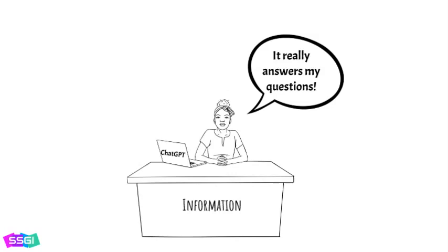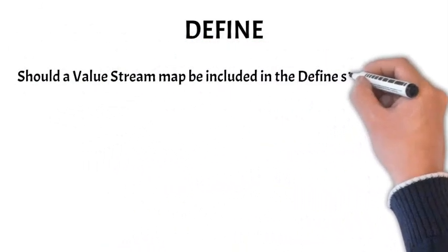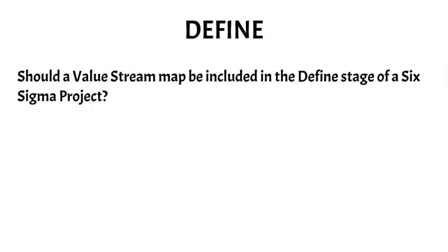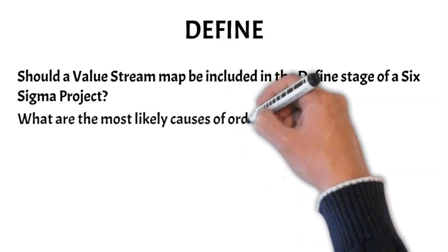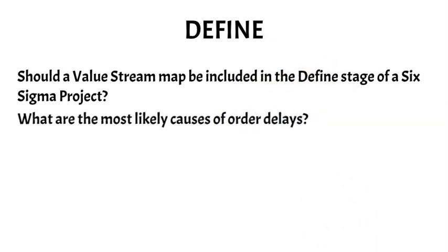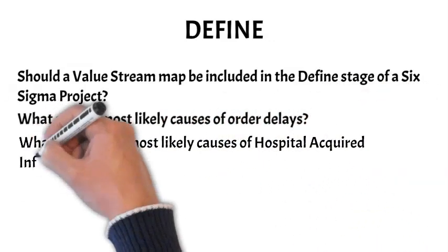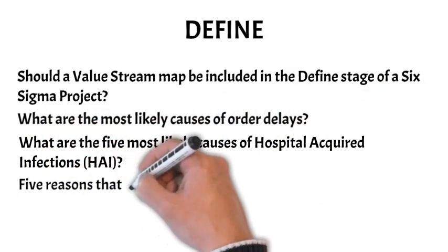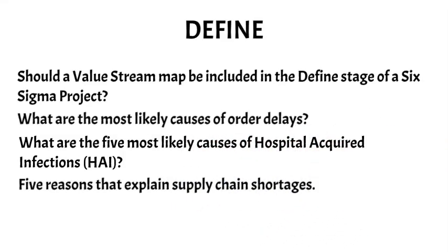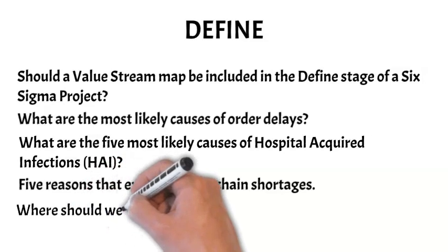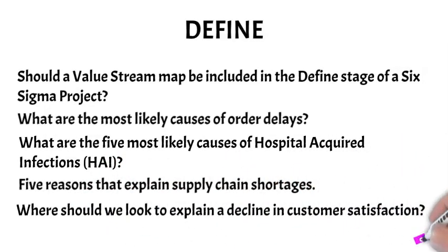First, we turn to Define. Here are examples of the type of questions that may be asked as we prepare a definition statement — the kinds of questions that help ensure a sufficiently broad yet practically feasible statement. Should a value stream map be included in the Define stage of a Six Sigma project? What are the most likely causes of order delays? What are the five most likely causes of a hospital-acquired infection? Five reasons that explain supply chain shortages. Where should we look to explain a decline in customer satisfaction?